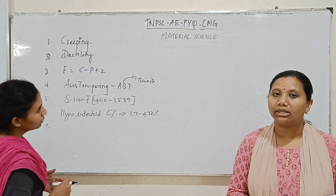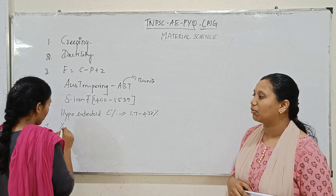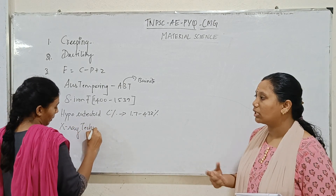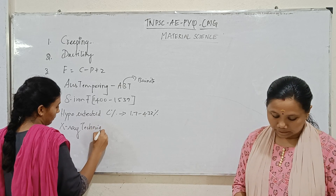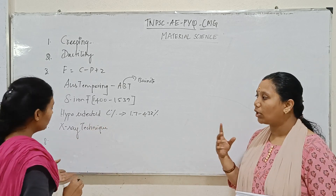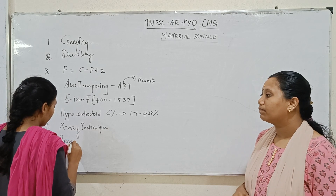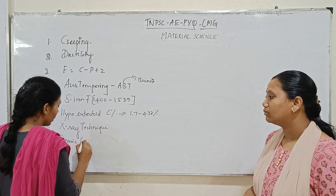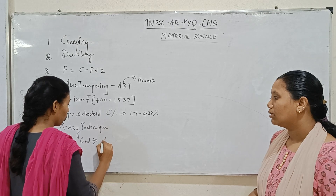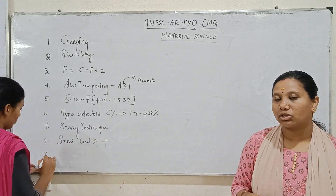Crystal structure is studied using the X-ray technique. In a semiconductor, the outer orbit valence electrons number 4 — so in a semiconductor, the valence electrons are 4.